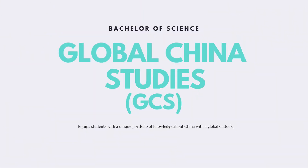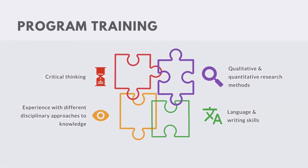GCS is a multidisciplinary humanities and social science program that builds expertise in the history, culture, politics, and society of China in a global context. It's also a program that trains students to become fluent in the methodologies of the humanities and social sciences. It builds critical thinking, experience with different disciplinary approaches to knowledge, language and writing skills both in English and Chinese, and qualitative and quantitative research methods.